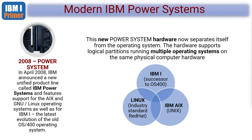A Power System is capable of running multiple operating systems. Just like Windows machines can have virtual machines or logical partitions, you can install multiple versions of an operating system inside the same hardware. With the launch of the Power System, IBM announced a new unified product line — IBM Power Systems — with support for AIX and Linux as well as IBM i.